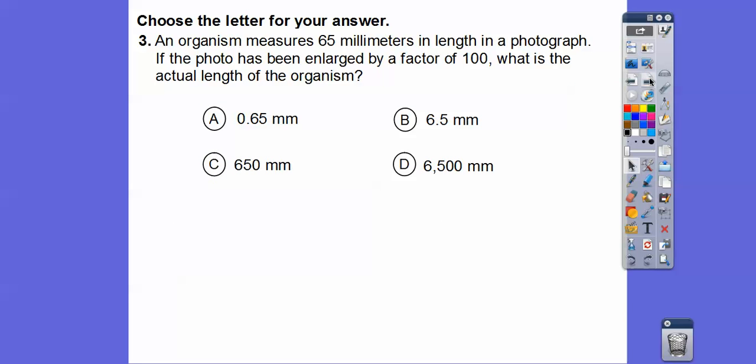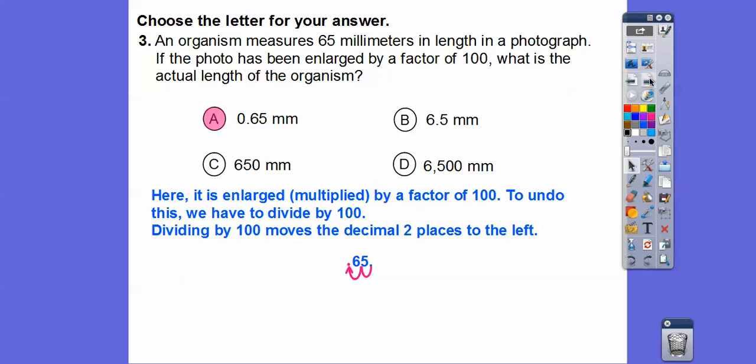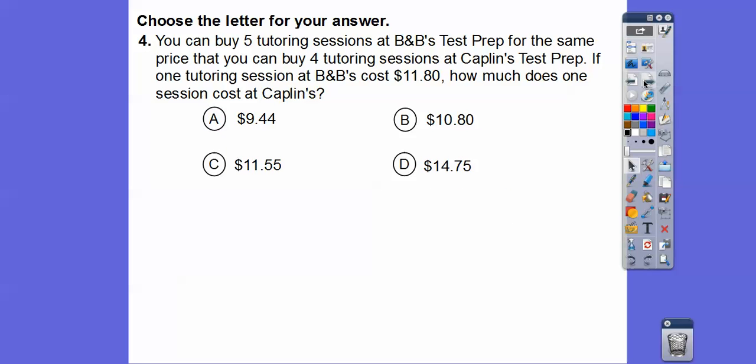All right. So an organism measures 65 millimeters in length in a photograph. If the photo has been enlarged by a factor of 100, what is the actual length of that organism? If it's been enlarged, that means it's been multiplied by a factor of 100. So to undo this, we have to go backwards and divide by 100. And when we divide by 100, we just move the decimal over two places to the left. So there's no decimal, it's assumed to be right there. So two places over there is 0.65, so 0.65 millimeters.